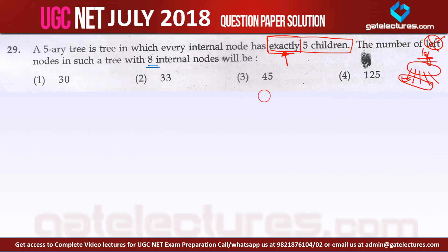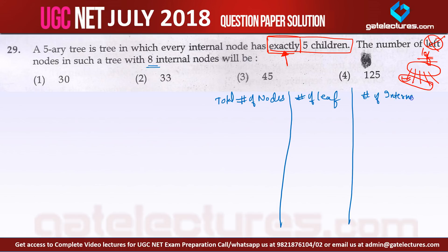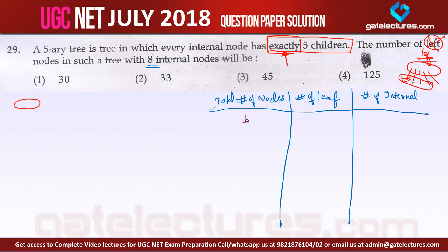So the question is: in a 5-ary tree where every internal node has exactly five children, how many leaf nodes are there when there are 8 internal nodes? Let me solve it using induction by tracking total number of nodes, number of leaf nodes, and number of internal nodes.